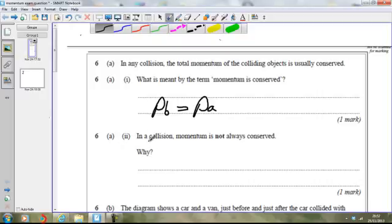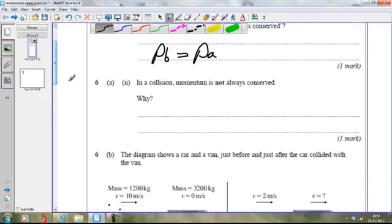Part two is asking in a collision momentum is not always conserved. Why? Well that's a case of external forces coming to play. So you literally just have to say there that momentum wouldn't be conserved if you factor in the effect of external forces.